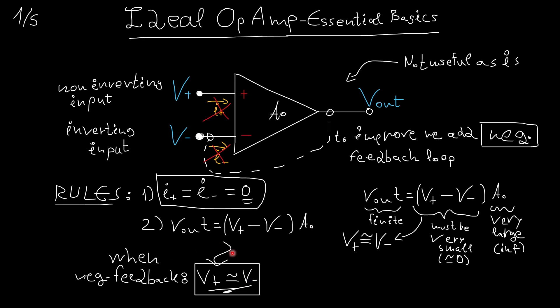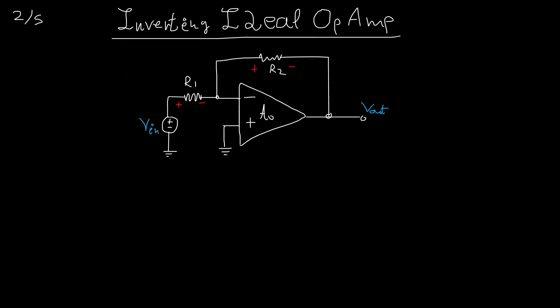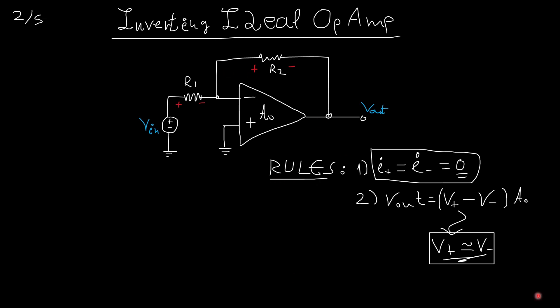Again, this is true only when we have a negative feedback loop, and it's true most of the times. Not always, but 99% of the time. All right, moving forward, let's examine the inverting op-amp. Again, we have the little rules here, so we remember them.